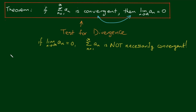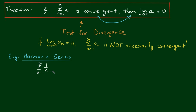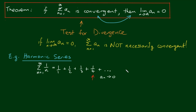An example of this is the harmonic series. The harmonic series is defined as the sum from n equals 1 to infinity of 1/n. If we expand that out, we get 1 + 1/2 + 1/3 + 1/4 + so on and so forth. We can see that as we go along, these terms are definitely getting smaller and smaller and tending towards zero, so a_n is approaching zero. However, the harmonic series is not convergent. We'll demonstrate how this is in another video.